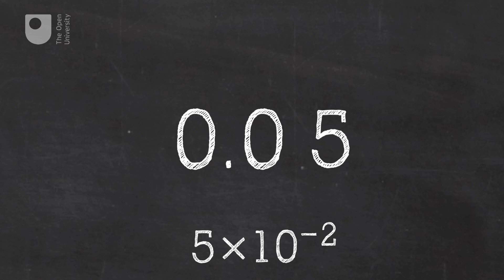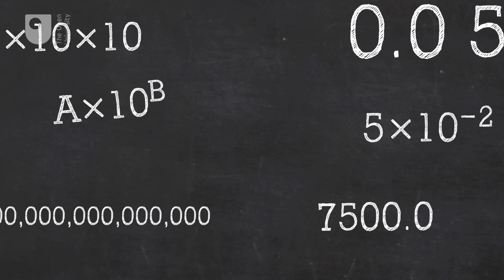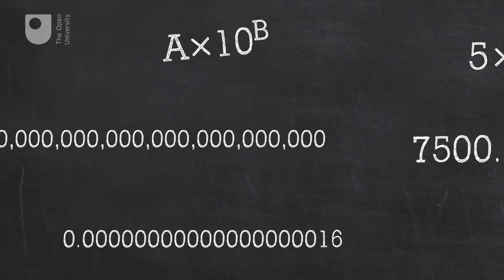So the number 0.05 can be written in scientific notation as five times ten to the power of minus two. We can check this: ten to the power of minus two is 0.1 times 0.1, which equals 0.01, and 0.01 multiplied by five gives us 0.05.